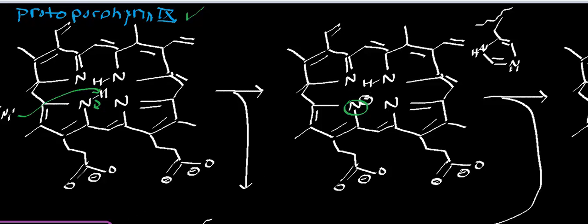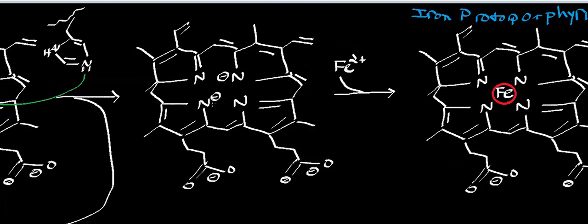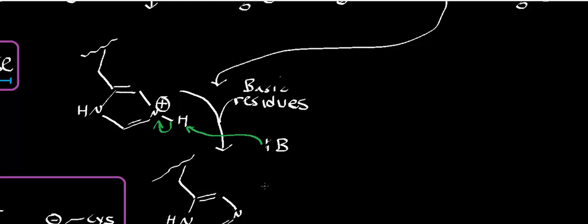The exact same mechanism happens on the other nitrogen: the histidine comes in, there's a proton transfer, and you get the same result as in the first mechanistic step. Now you have a completely deprotonated porphyrin ring system. The only thing needed is the ferrous iron. There are many resonance contributors for this molecule, but the electron density is distributed throughout the entire porphyrin ring system. Again, the histidine gets deprotonated by basic residues, pumping the proton out of the enzyme and away from the porphyrin ring.